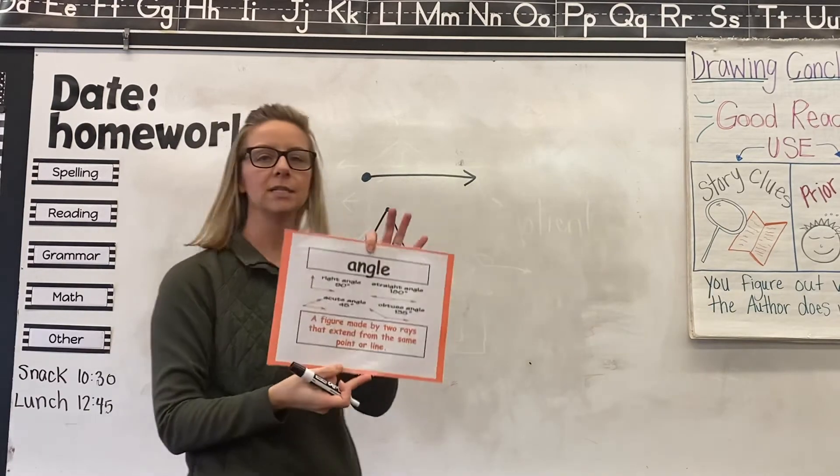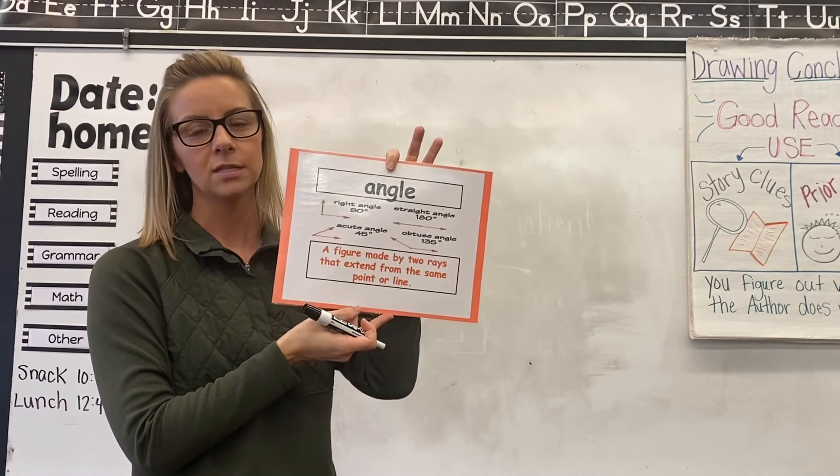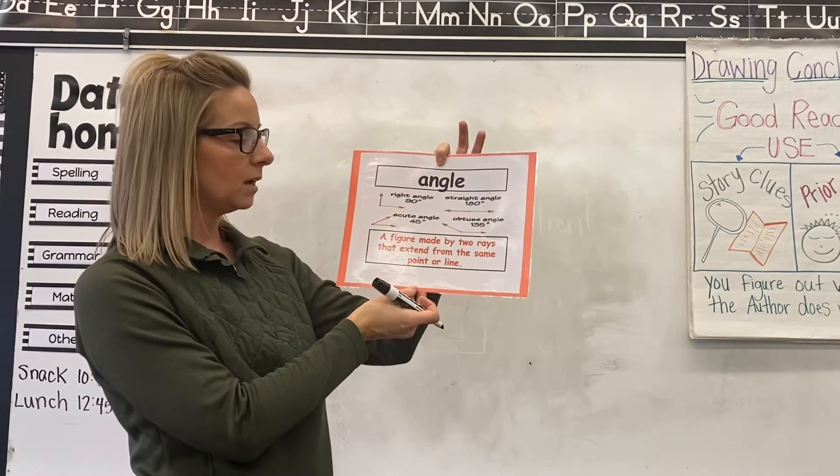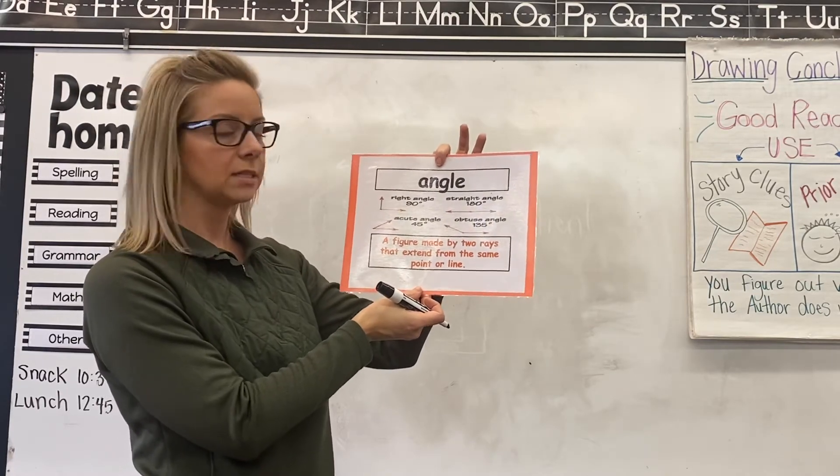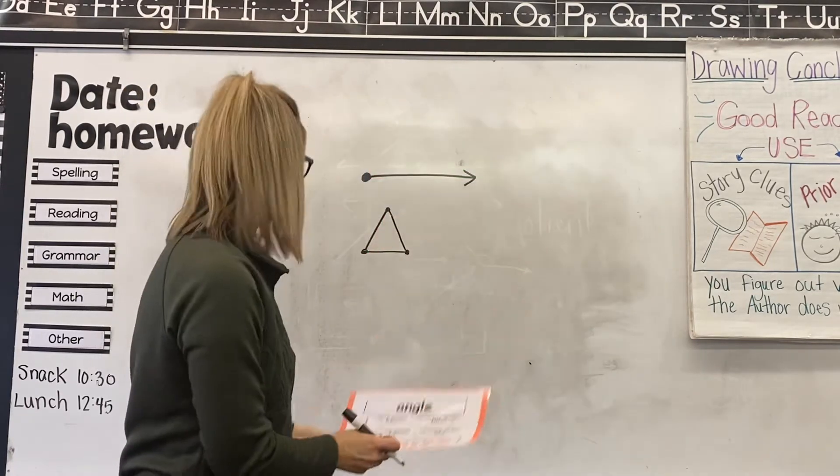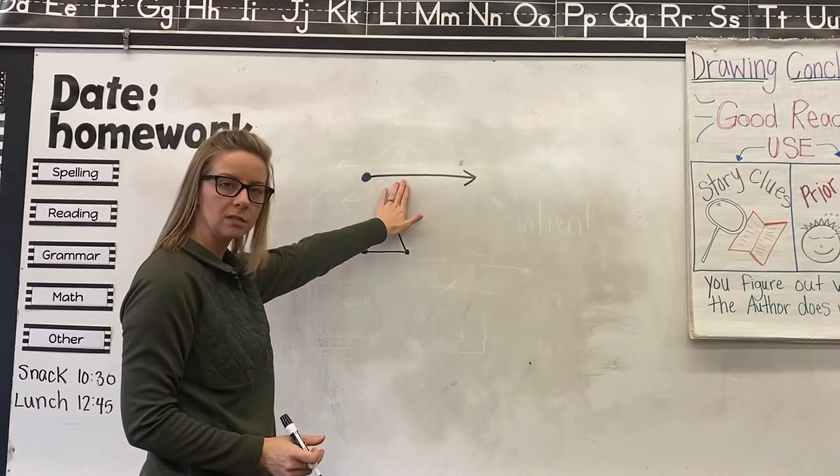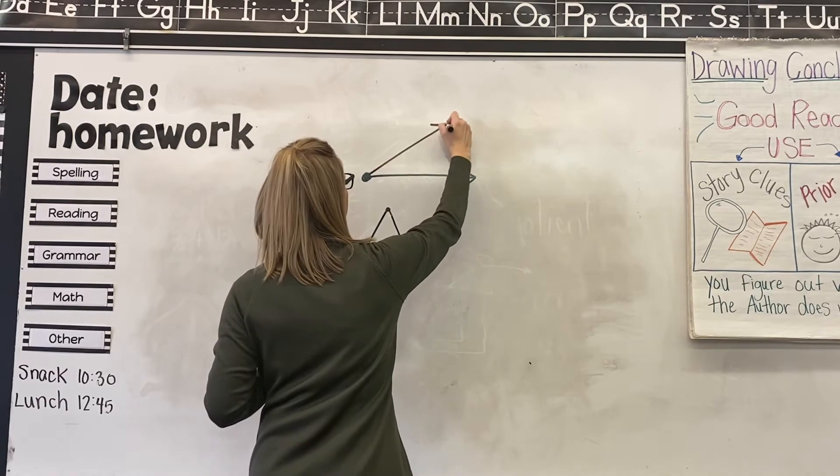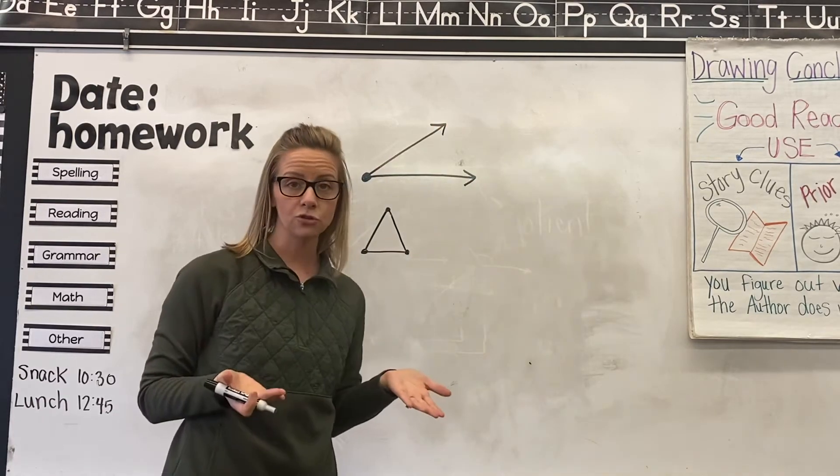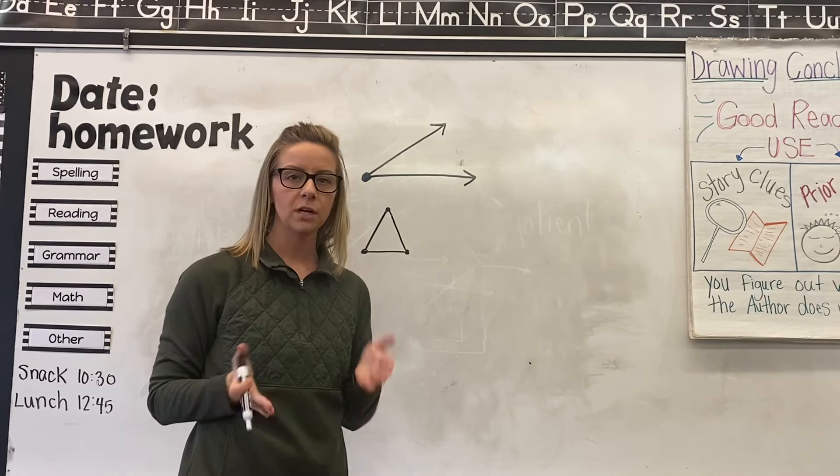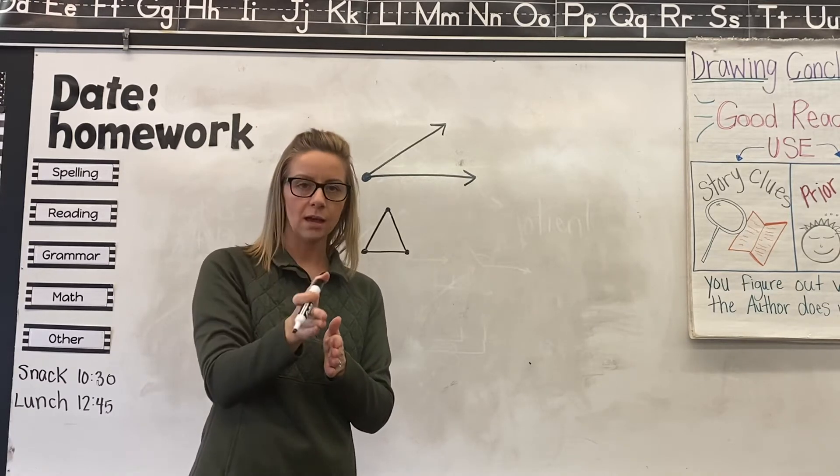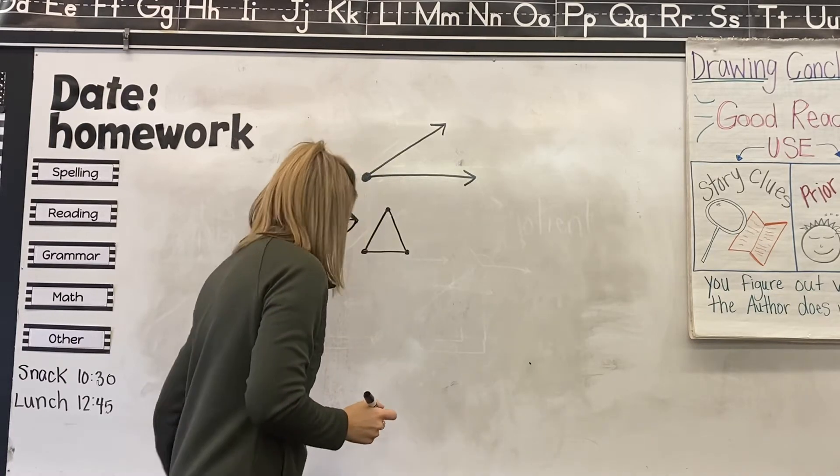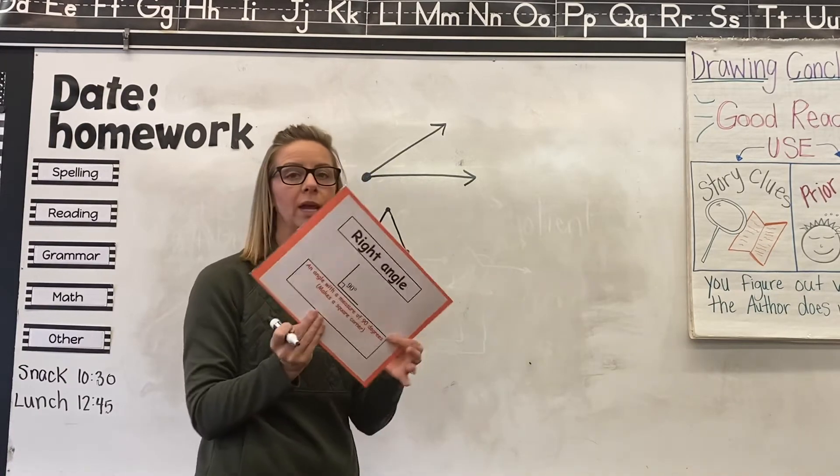The next word is angle. And I talked a little bit about angles in the first lesson. But an angle is a figure made up by two rays that extend from the same point or line. So if I take two of these and put them together from the same end point, we make an angle. Now angles can be measured and we kind of go off of a straight angle that goes up and down and then out to the side which measures 90 degrees, which would be a right angle.